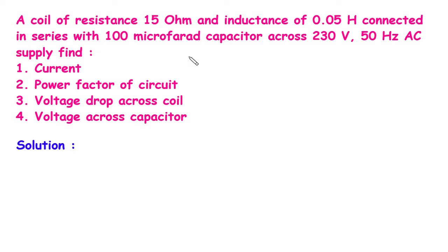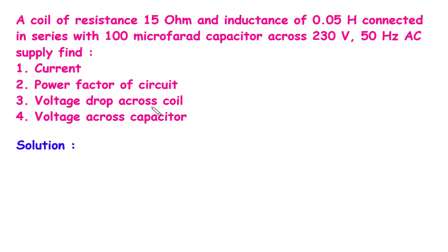If you find this video helpful, feel free to donate whatever amount you can — link is in the description below. A coil of resistance 15 ohm and inductance of 0.05 henry, connected in series with a 100 microfarad capacitor across a 230V 50Hz AC supply. Find: number 1, current; number 2, power factor of the circuit; number 3, voltage drop across the coil; and number 4, voltage across the capacitor.